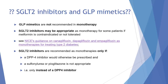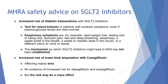Regarding SGLT2 inhibitors and GLP mimetics: GLP mimetics are not recommended in monotherapy. Treatment with an SGLT2 inhibitor may be appropriate as monotherapy for some patients if metformin is contraindicated or not tolerated — specifically only if sulfonylurea or pioglitazone are not appropriate and a DPP-4 inhibitor would otherwise be prescribed. We also need to be aware that there is an increased risk of diabetic ketoacidosis with SGLT2 inhibitors.